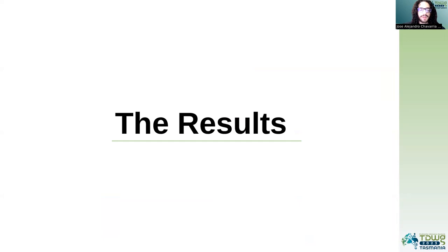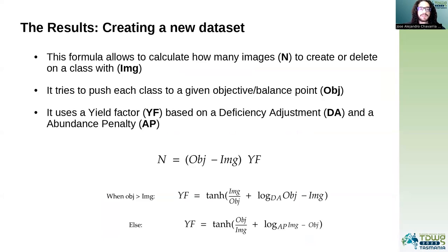So the results. What happened when we combined transformers and these transformation techniques? First of all, we needed to create a dataset. So we created a formula to calculate how many images we wanted to create or delete for a certain specific class with a given amount of images. Basically, this function tries to push each class toward a balance point — it is a way to control how many images we want to create or delete without overdoing it. You can take a picture of it if you want. I'm not explaining the full formula, but that's the general idea.